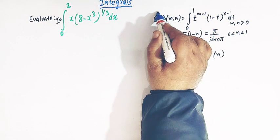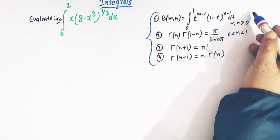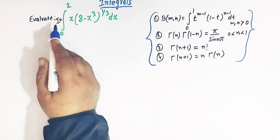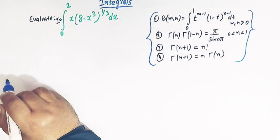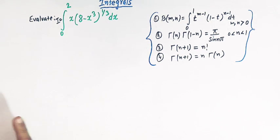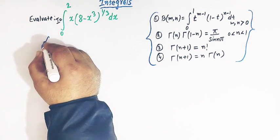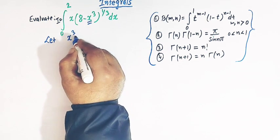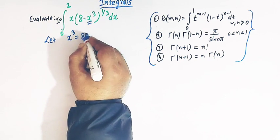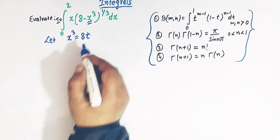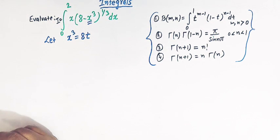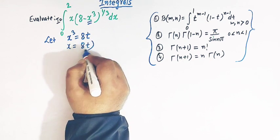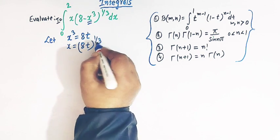These are the important results used in solving this integral. Let us first make use of the substitution method. Here I will take x³ equal to 8t, where t is our new variable. So x can be written as (8t) raised to 1 over 3.